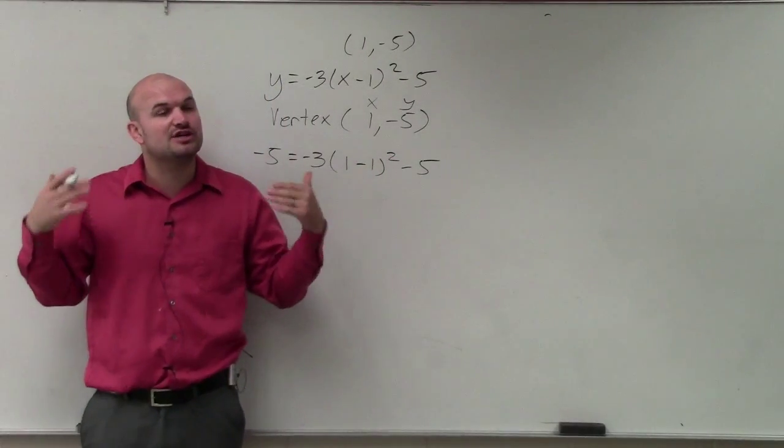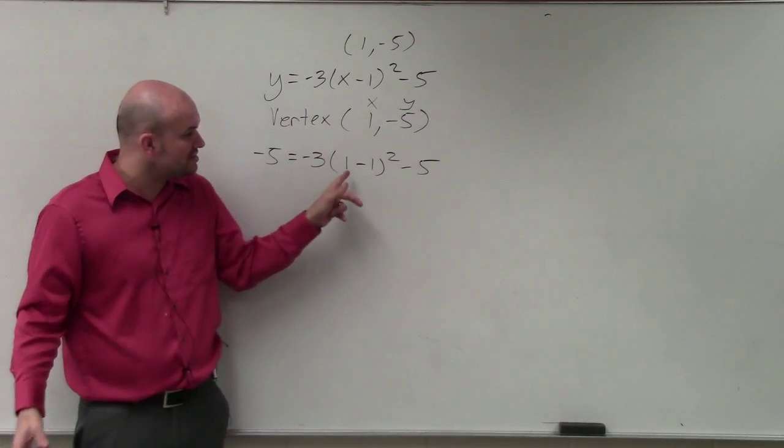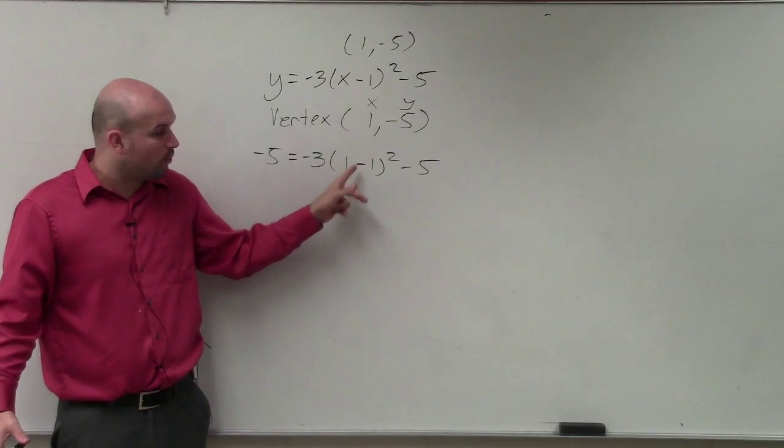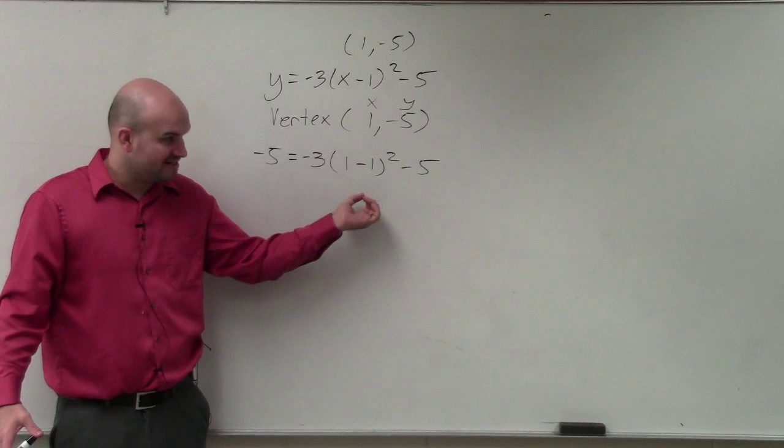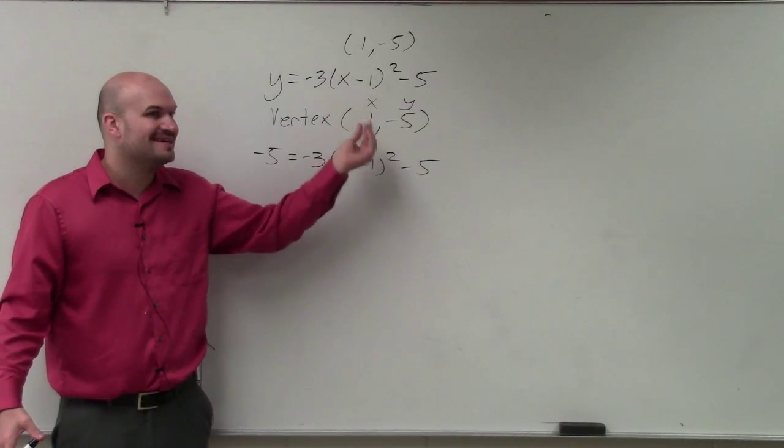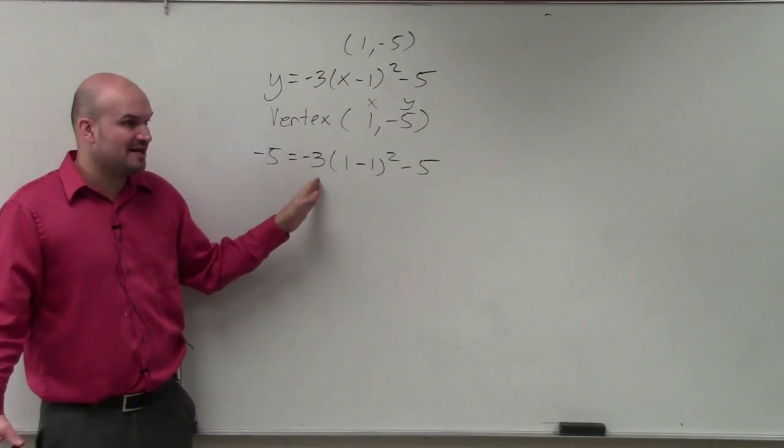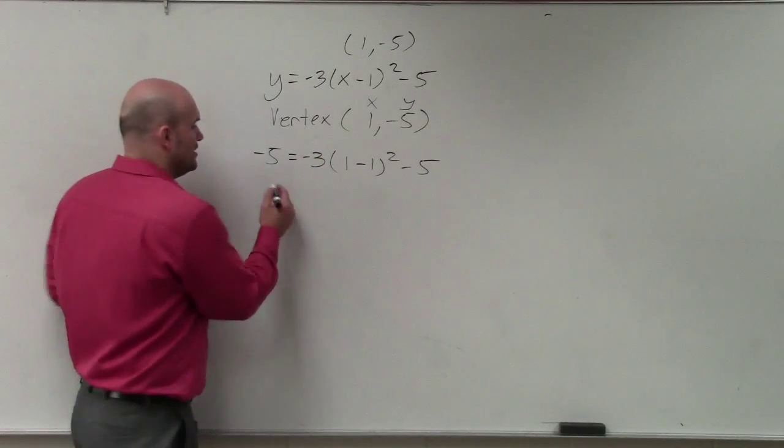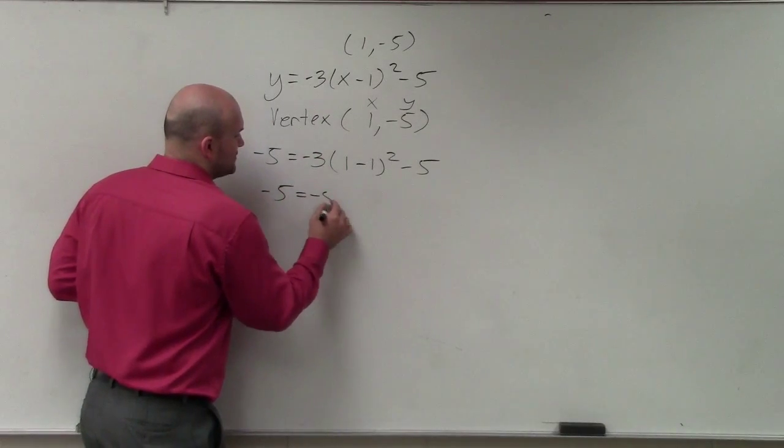Now when you're doing this, make sure you follow the order of operations. Inside the parentheses first: 1 minus 1 is 0. 0 squared is 0. 0 times negative 3 is 0. So you're left with negative 5 equals negative 5.